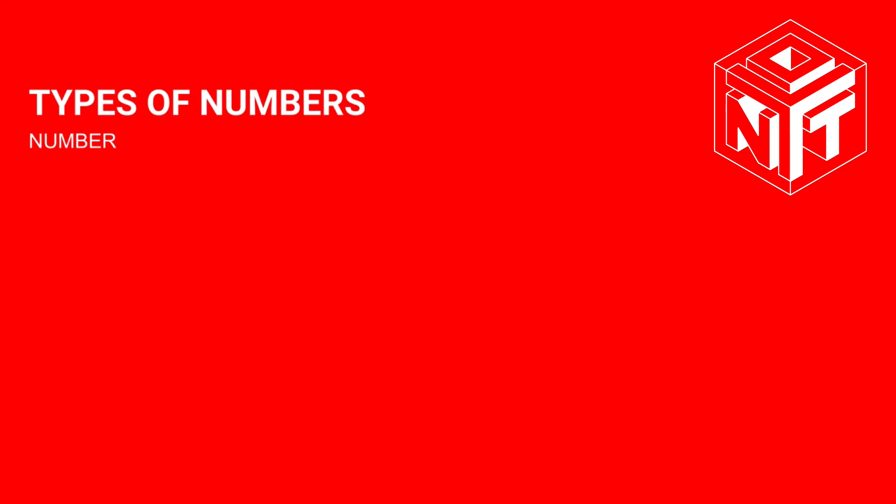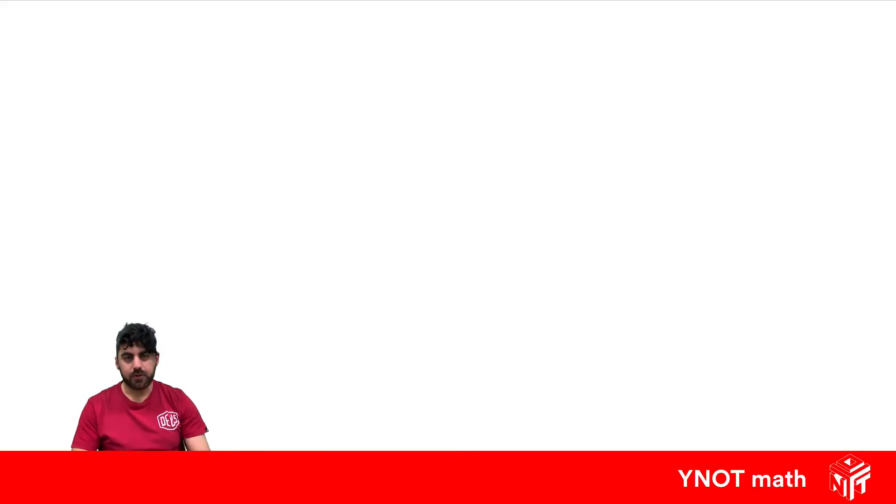Types of numbers. You've probably heard types of numbers and thinking, I know all the numbers. You know, 1, 2, 3, 4, 5, 6, 7, 8. You might know some more. But how far do they go? How many are there?